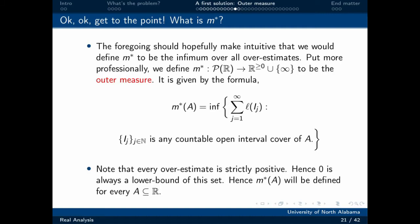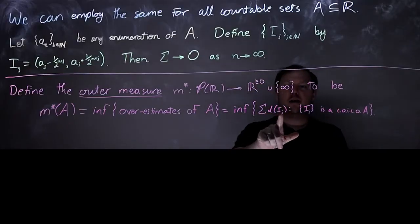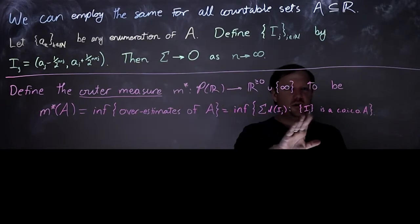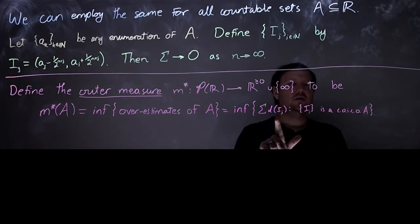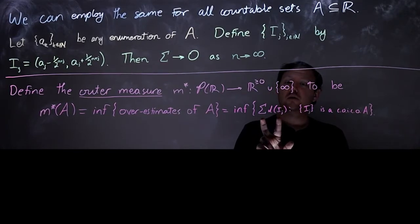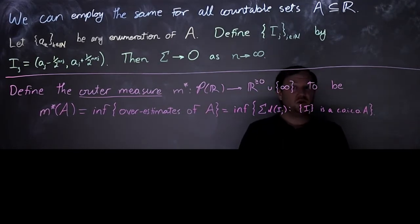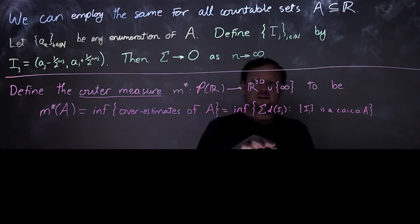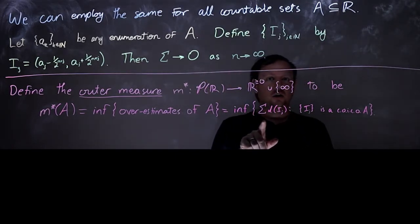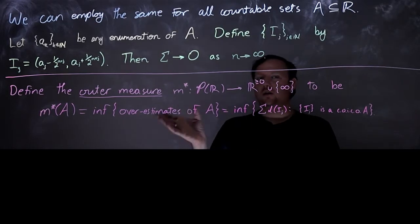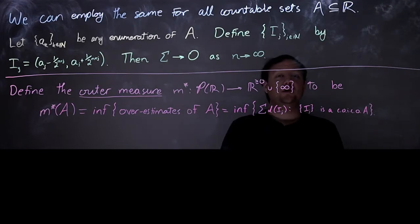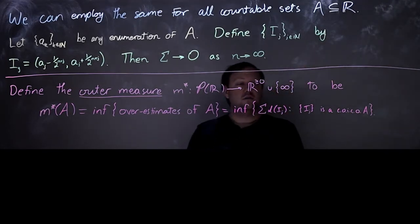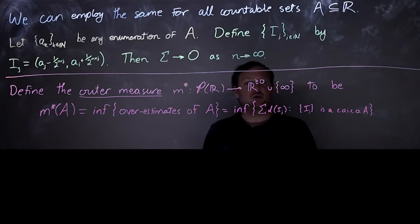Notice that every single one of these lengths, because of the constraints on what a countable open interval cover of A is, these lengths are all strictly positive and therefore the overestimates are strictly positive. That tells us that zero is always a lower bound on the set of overestimates. It's never an element of the set, but it's always a lower bound — and that will occasionally be useful, especially when M* of some set is equal to zero.